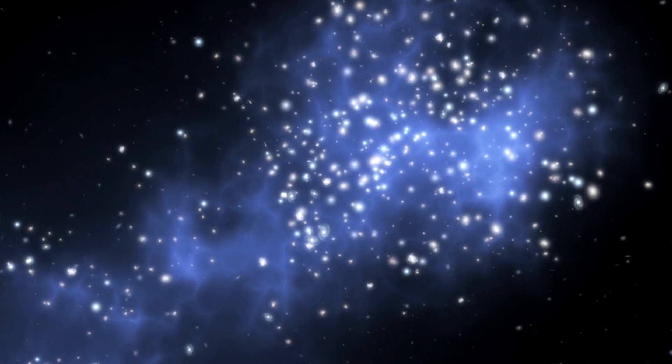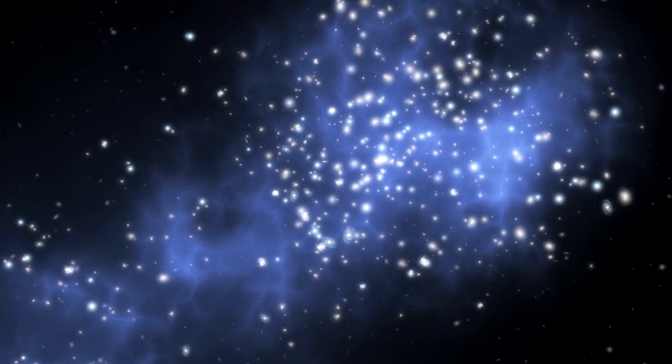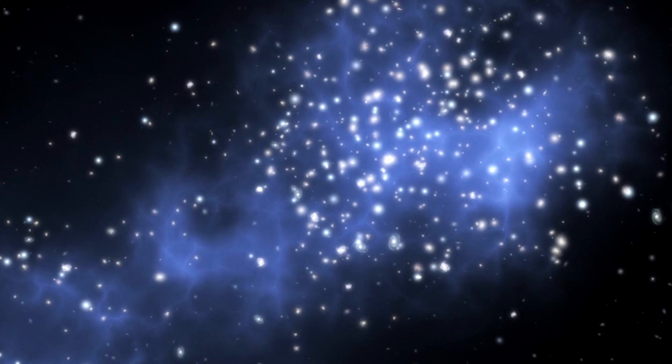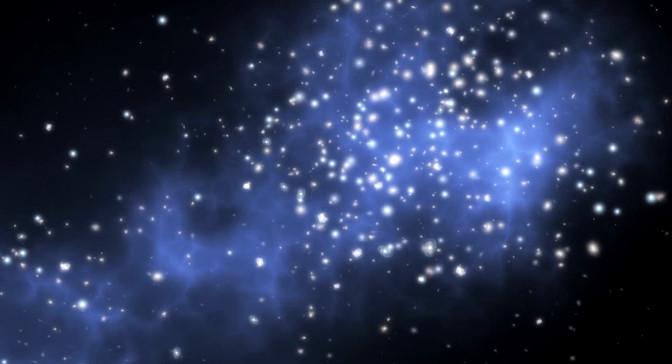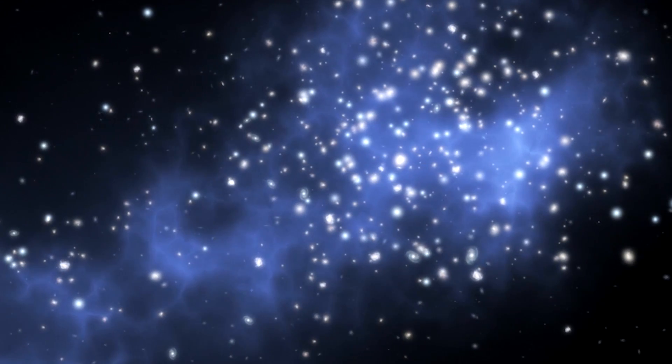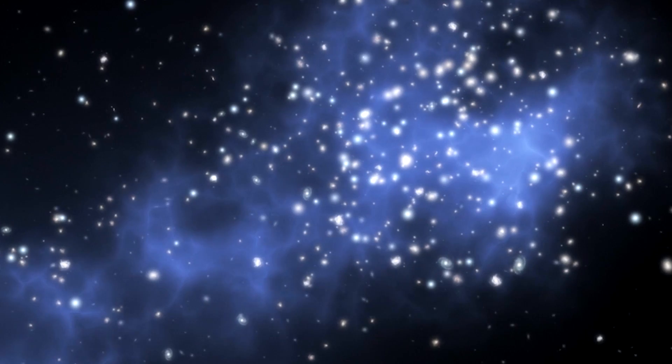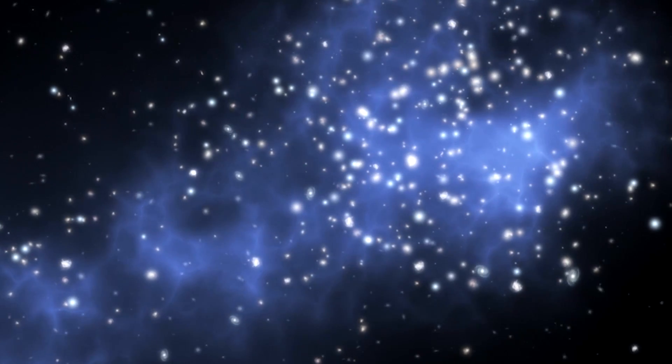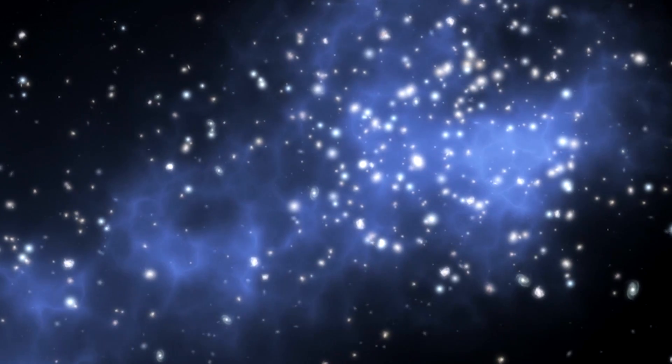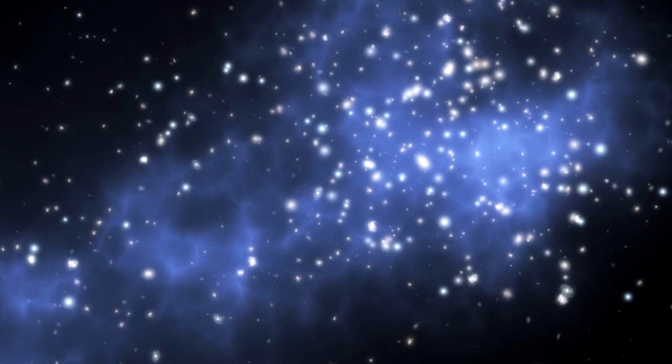We think that galaxy clusters contain 90% dark matter, about 9% hot gas, and only 1% stars and galaxies. If dark matter makes up most of our galaxy cluster, then we would expect most of this mass to be observations of dark matter.